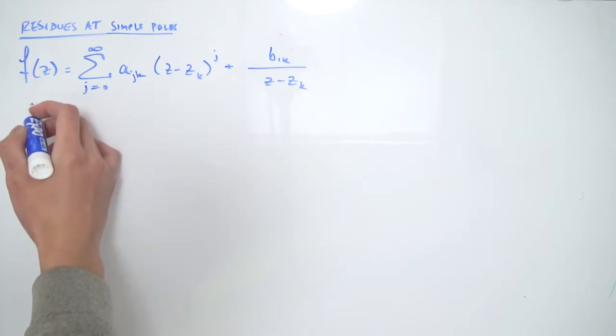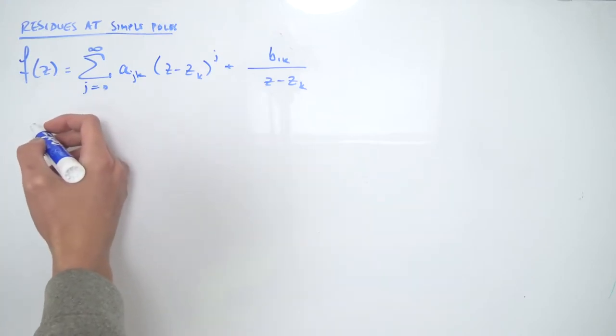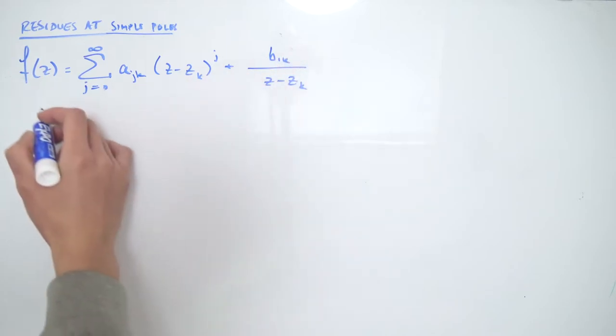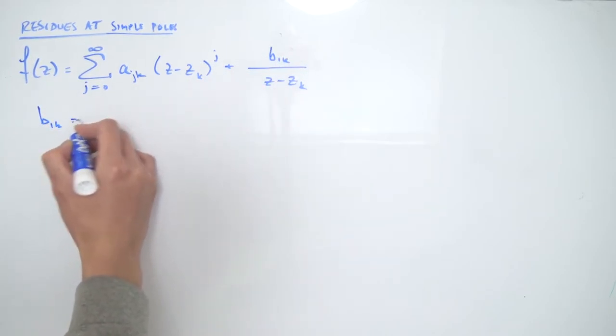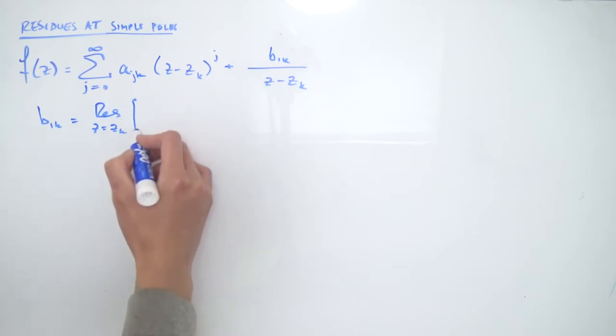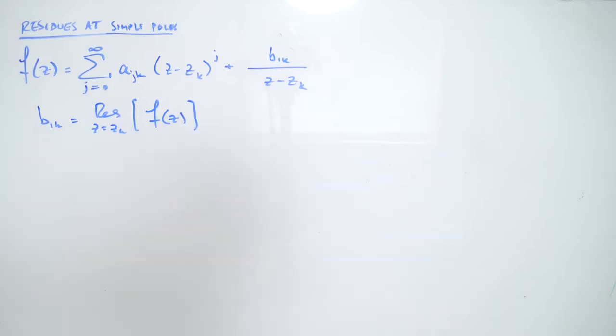So in order to find the residue, remember that in the previous video where I proved Cauchy's Residue Theorem, we defined this B sub 1k term to be equal to the residue at Z equals Zk of our function F of Z. So in order to find the residue at Z equals Zk, we need to recover this B sub 1k term somehow. Our goal is to recover this B sub 1k coefficient on our Laurent series.